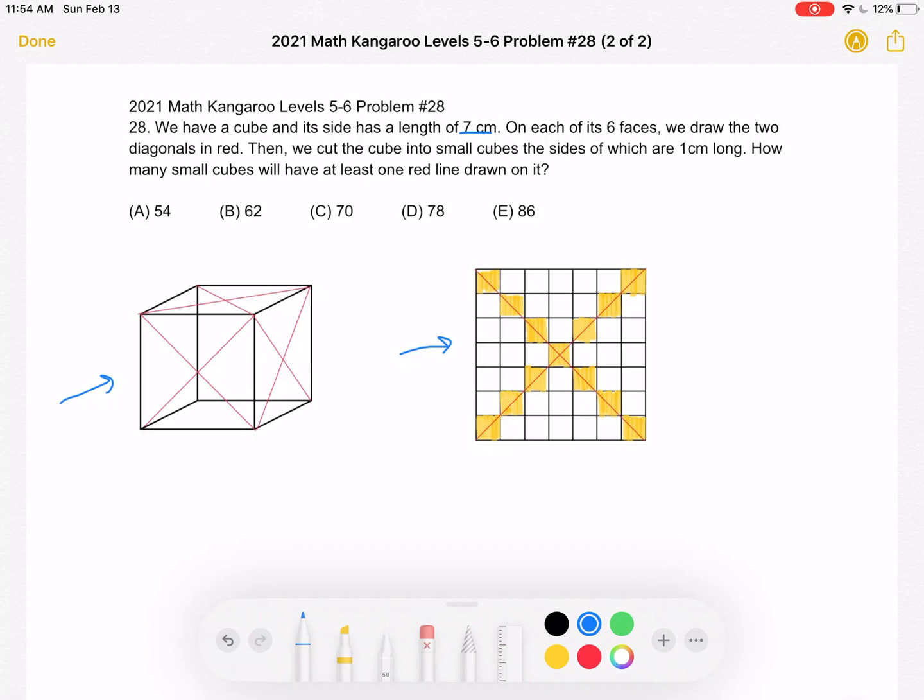Again there are red lines as the diagonals and we're trying to count the number of small cubes that are one by one that will have at least one red line drawn on it. So looking at this one face we can see that each diagonal will have seven cubes with the red line drawn through them.